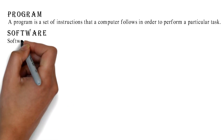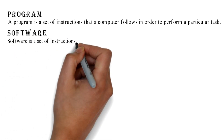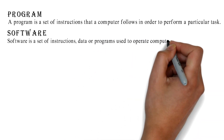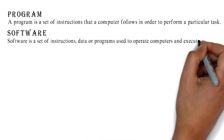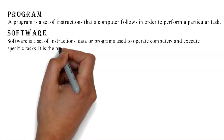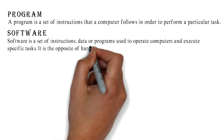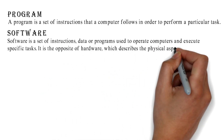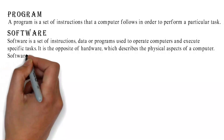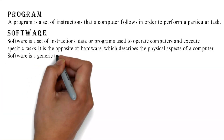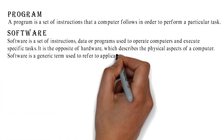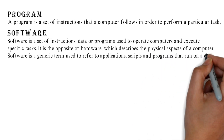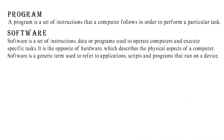Software is a set of instructions, data, or programs used to operate computers and execute specific tasks. It is the opposite of hardware, which describes the physical aspects of a computer. Software is a generic term used to refer to applications, scripts, and programs that run on a device.